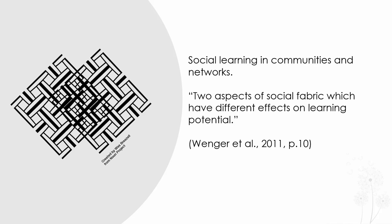When learning in the online space, as in the offline world, people cluster together in various configurations depending upon their context and needs. Two of the configurations which feature strongly in social learning research are communities and networks. Fenger suggests that communities and networks are not two different things, but two aspects of the same social fabric. The threads of networks and communities are interwoven, yet they have different effects on learning potential.